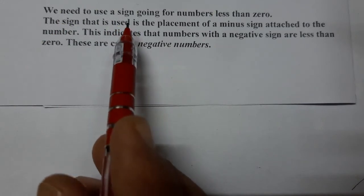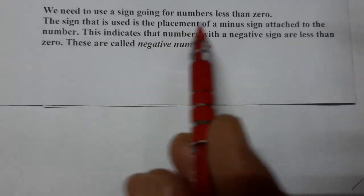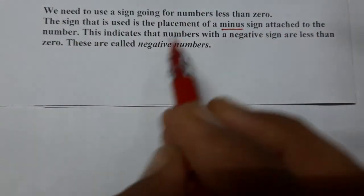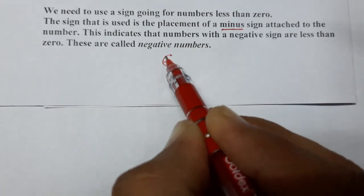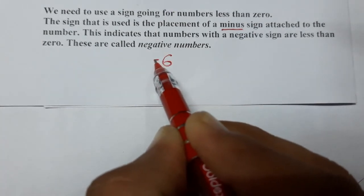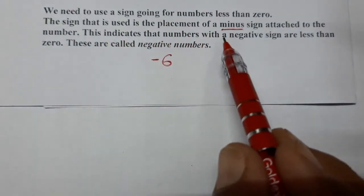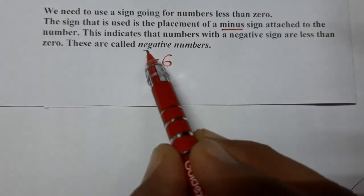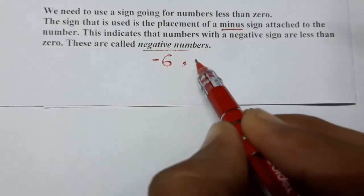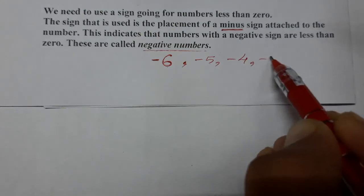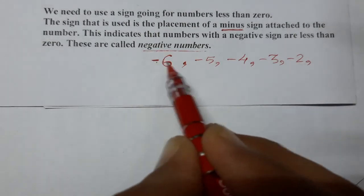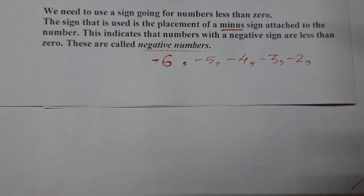We need to use a sign before writing numbers less than zero. The sign used is the minus sign, placed right before the number. For example, positive six is written as 6. Negative six is written with a minus sign before it. Numbers with a negative sign are less than zero — minus 6, minus 5, minus 4, minus 3, minus 2, and so on. I hope the topic is clear to all of you — what integers are and what negative numbers are. Thank you for watching.